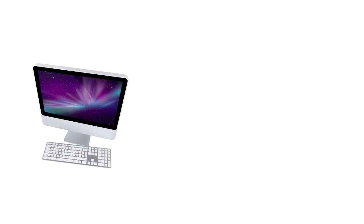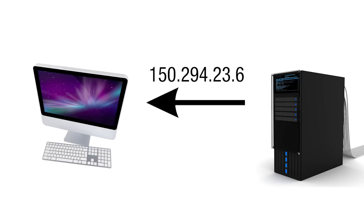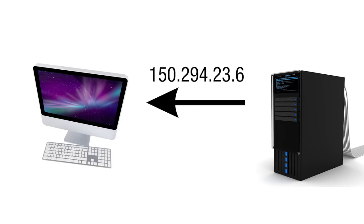So when you type in google.com into your browser, your computer will ask the internet provider's DNS server what the IP address is for google.com. Then it gives you the IP, and your computer connects to that — but it all does this behind the scenes.